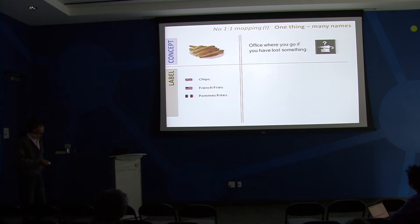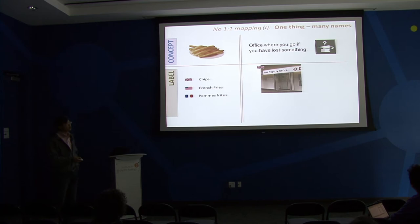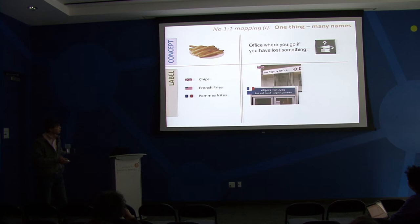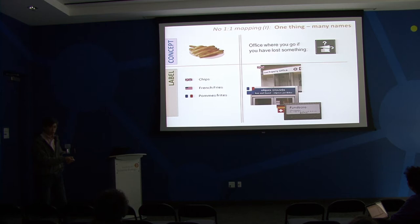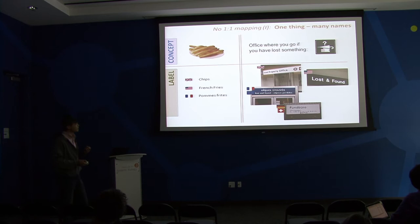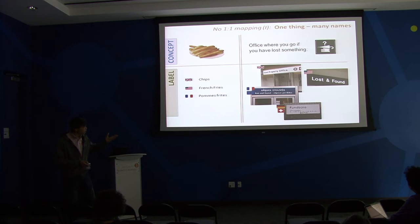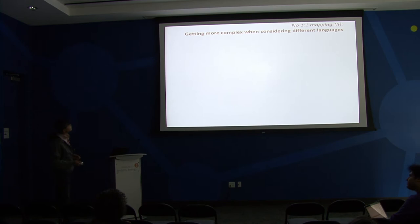Can somebody tell me what the place is called that you go to if you have lost something? In Great Britain it's called 'lost property office,' 'objets trouvés' in France, 'Fundbüro' in Germany and Switzerland - which means 'found.' So the Brits are probably more pessimistic - they call it lost objects - and in Germany you call it 'found object office.' In the US we can't decide, it's both. The same concept can have different labels, and already you see that the way we name something introduces some cultural bias. You can maybe read something about the psyche of these different nations.